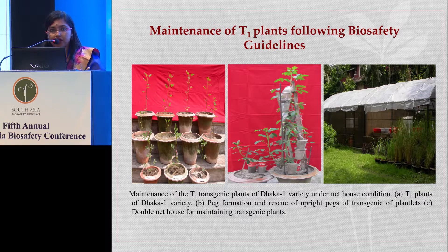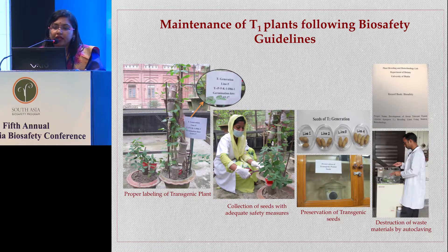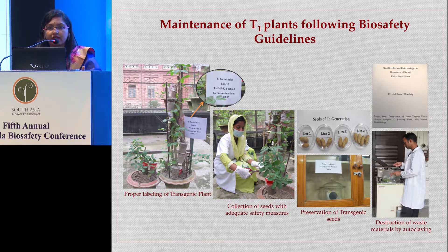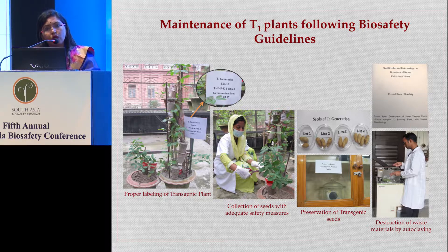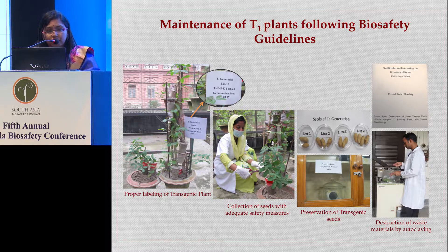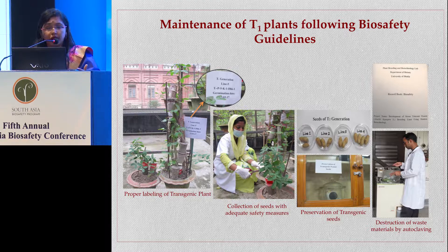You can see our T1 transgenic lines here. For the maintenance of T1 transgenic plants, proper labelling is very important. We are taking care of proper labelling as well as adequate safety measures for seed collection and preservation of seeds from the transgenic lines in a safe place. Any debris or waste materials produced from the plants are being destroyed by either autoclaving or burning. As scientists, recording of data is very important, so we are recording our data properly for precise use in further work.